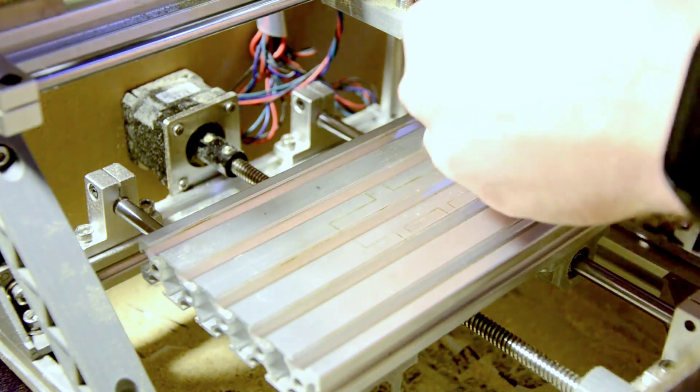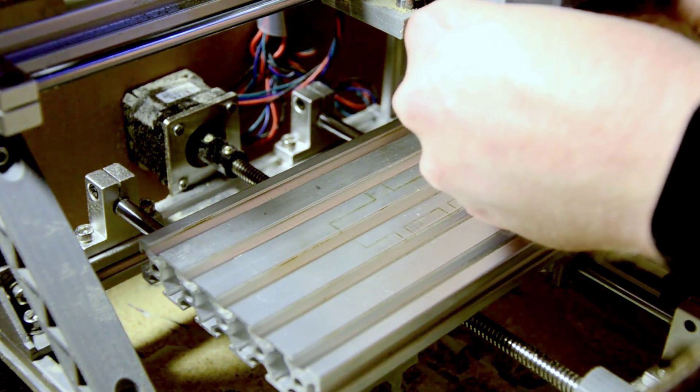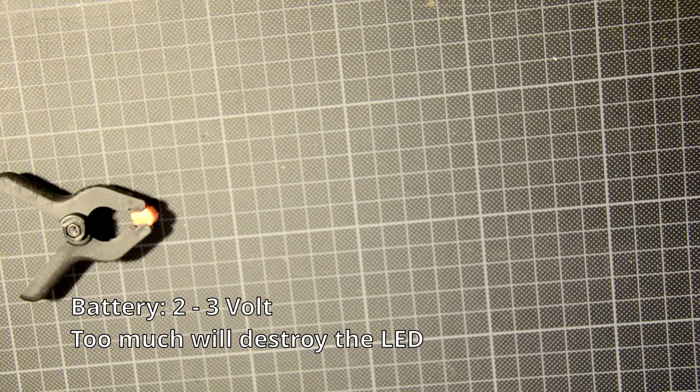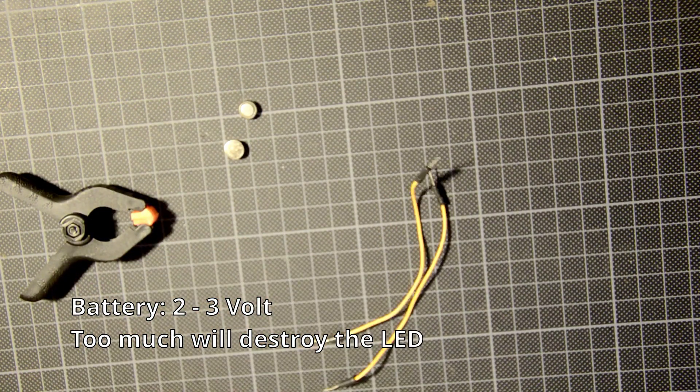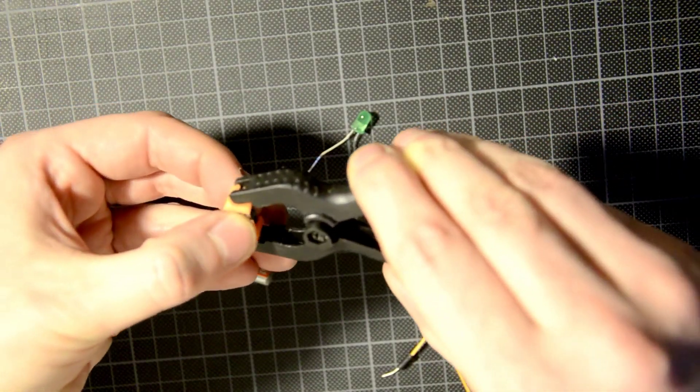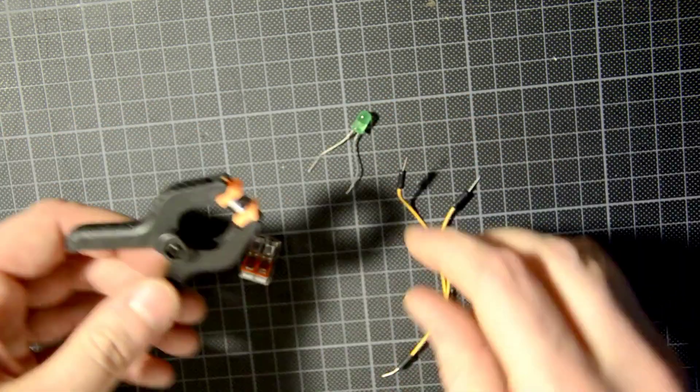But it's not enough, and I think we can do even better with the second method. This method requires some setup, but all we really need is a battery, an LED, and some wires. We're going to make the CNC part of a simple circuit, and use the LED to precisely indicate the positioning.